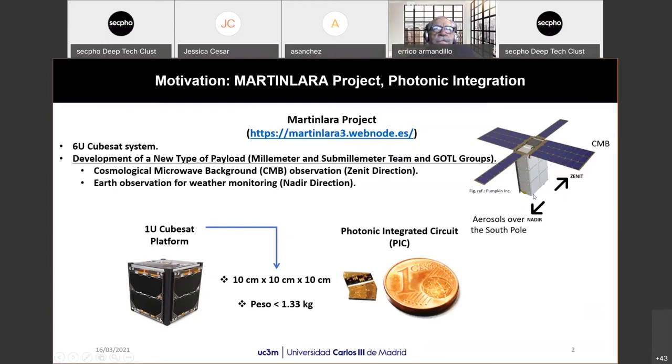This is just a reference figure. As we all know, the CubeSat has a certain volume and weight, so the system in it must follow some limitations. That's why our payload, which is the photonic-enabled radiometer that I'm going to present next, is denominated as a new type of payload, where a photonic-integrated circuit is used to reduce size, waste, and power consumption.